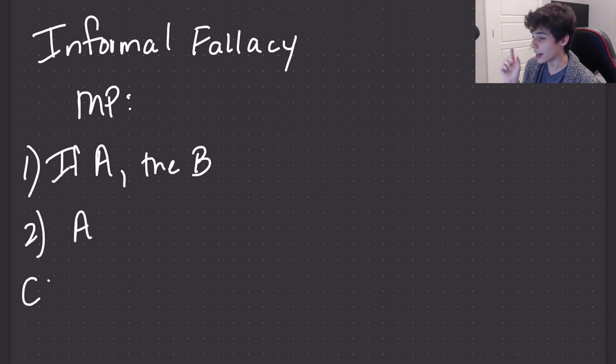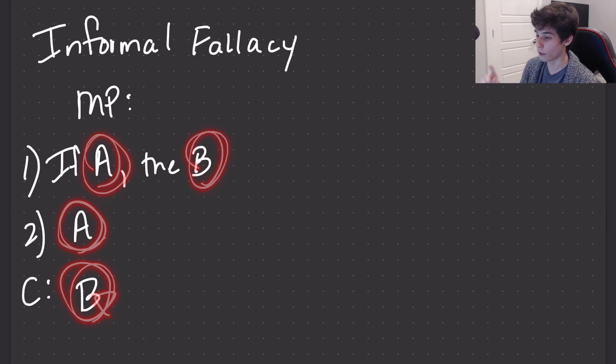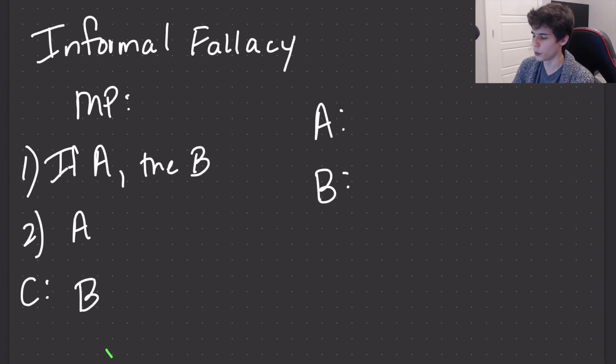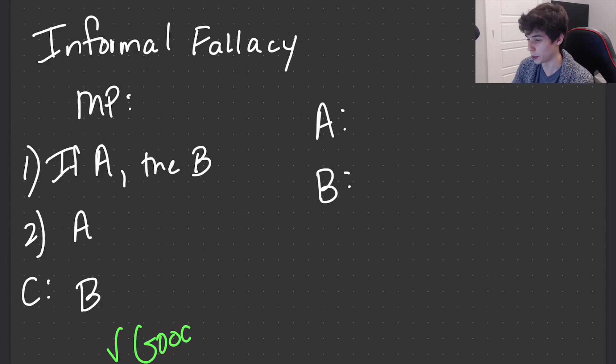To identify an informal fallacy, one must substitute those variables for the proposition or the language, I should say. So if I substitute A and B for their respective meanings or propositions, then you might identify an informal fallacy. But the form is fine. We can still get the conclusion with the premises, whether we accept them or not.